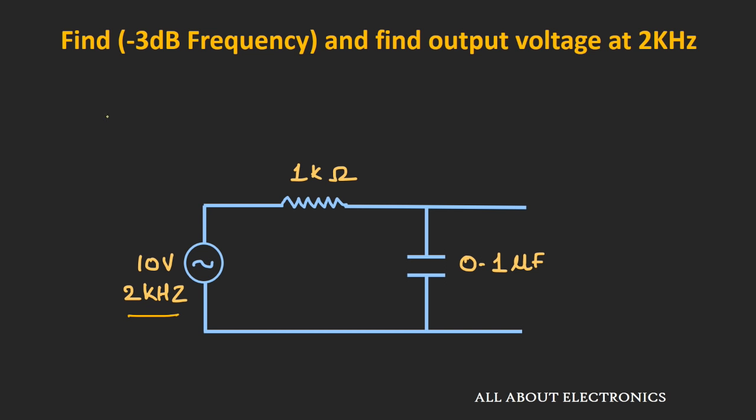At the input side, if you apply a 10V sinusoidal signal at 2 kHz, then at the output you will get a 6.22V sinusoidal signal. If we plot the frequency response for this low-pass filter, the cutoff frequency is 1.59 kHz, and the 2 kHz point sits just above it on the roll-off curve, where we found the output to be 6.22V.